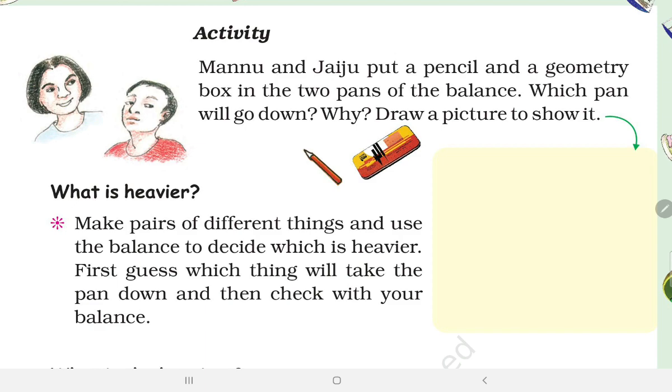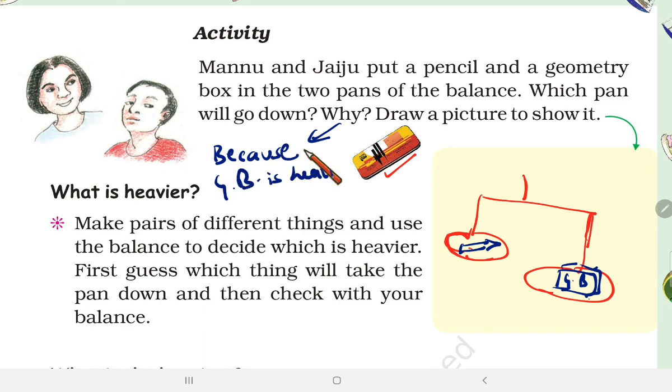Manu and Jaiju put a pencil and geometry box in the two pans of the balance. Which pan will go down? Why? Draw a picture. You know the heavy pan is below and the lighter pan is above. It means the geometry box is heavier. Here you will make the geometry box heavier, and the pencil is above. Why? Because geometry box is heavier than pencil.